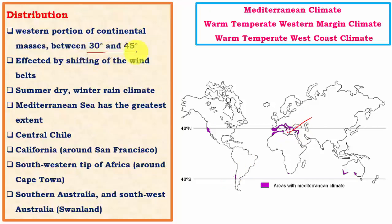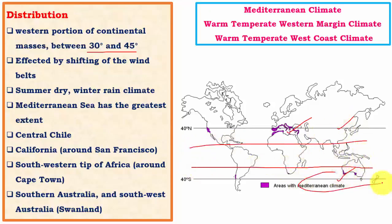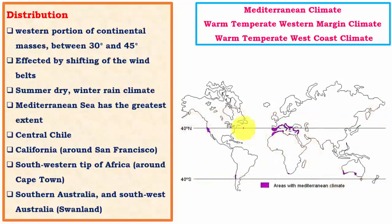Mediterranean climate occurs mostly between 30 and 45 degrees north and south of the equator — the temperate regions beyond the Tropic of Cancer and Tropic of Capricorn. It is affected by shifting wind belts. With the apparent movement of the sun, wind belts shift from north to south and back seasonally. When the sun moves toward the Tropic of Cancer, wind belts shift northward; in the opposite case they shift southward. Mediterranean climate is mainly formed because of this shifting of wind belts.